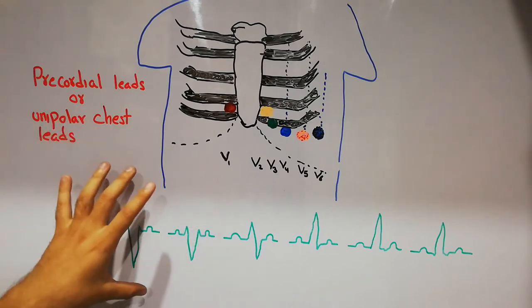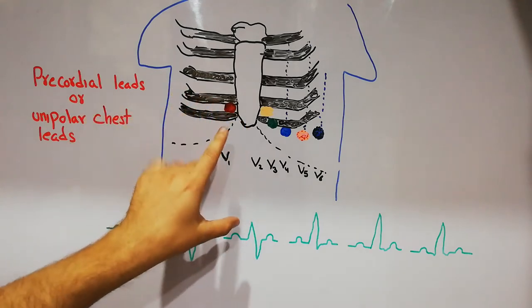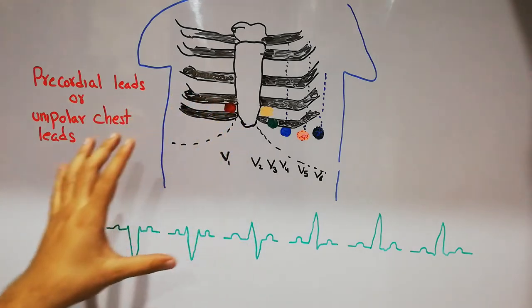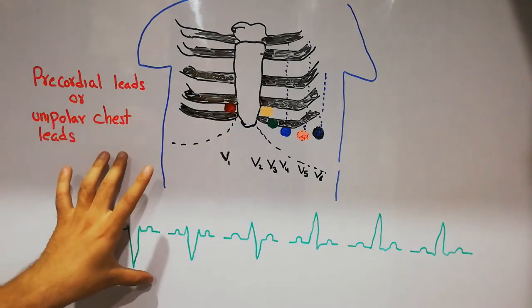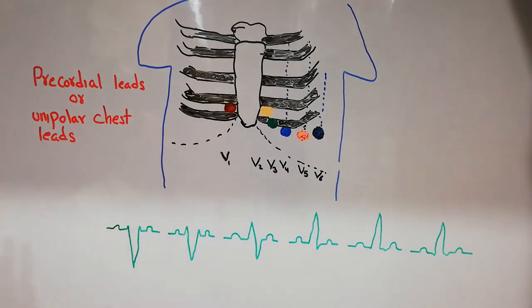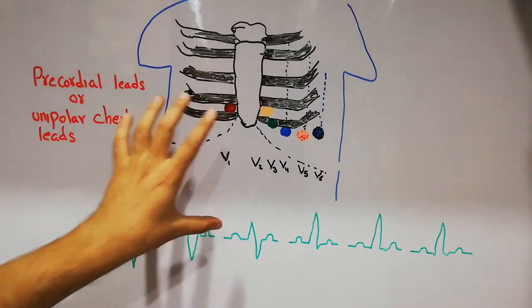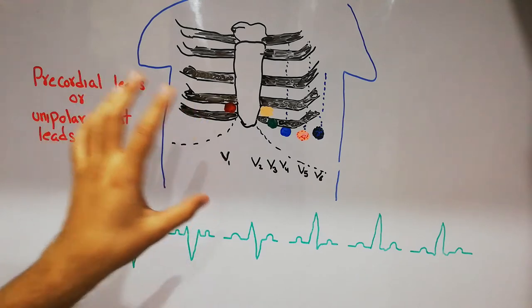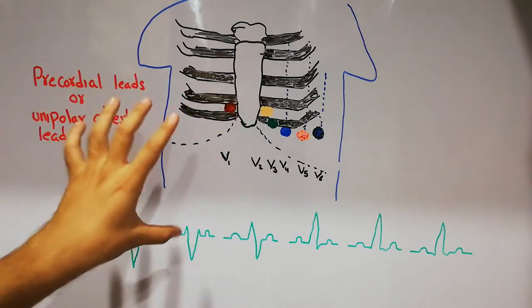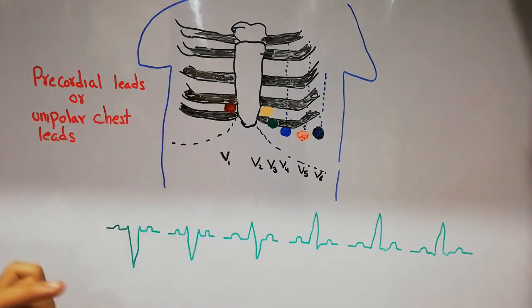Out of the 9 unipolar leads, 6 leads are unipolar chest leads while 3 leads are unipolar limb leads or augmented limb leads. Today we are going to discuss the position or placement areas for the chest leads, the precordial leads, or the unipolar chest leads.